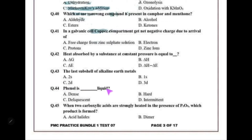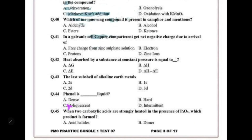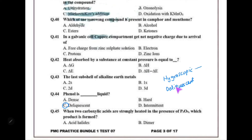Phenol is a deliquescent liquid. Remember: hygroscopic substances and deliquescent substances both absorb moisture from the atmosphere. However, hygroscopic substances do not form a solution, whereas deliquescent substances dissolve in the absorbed water to form a solution. That is the difference between the two.